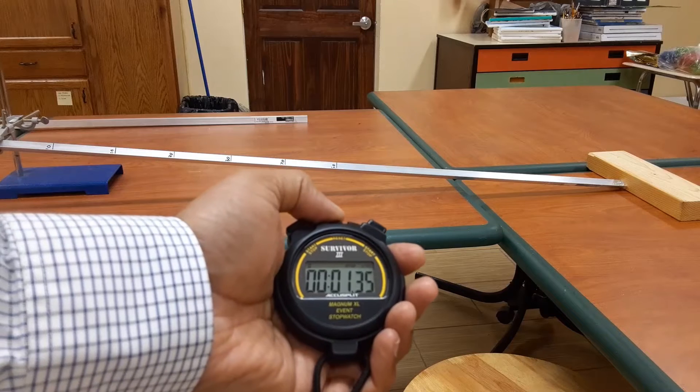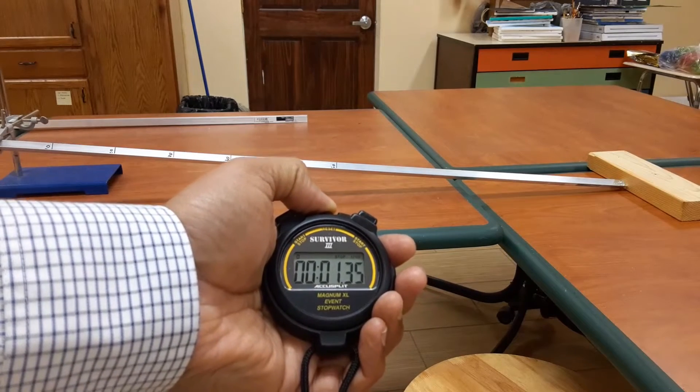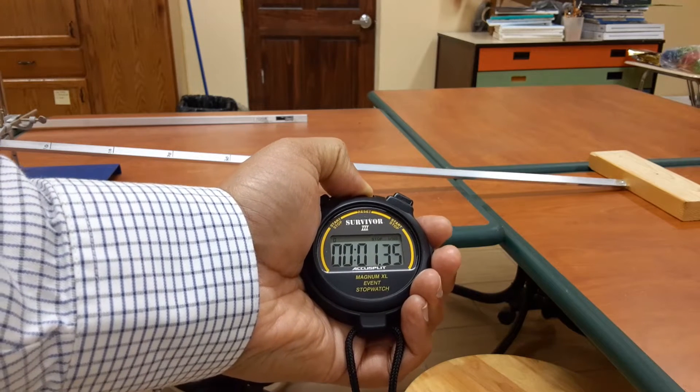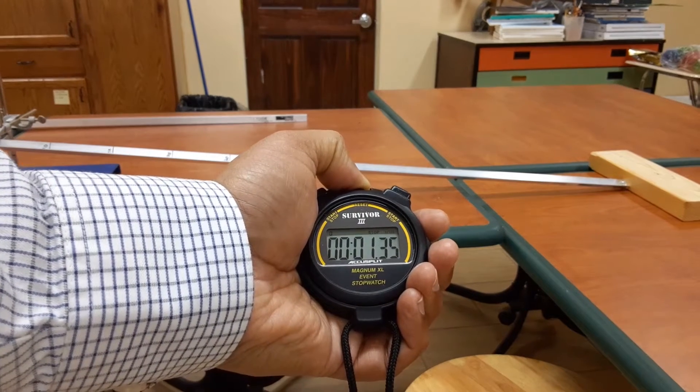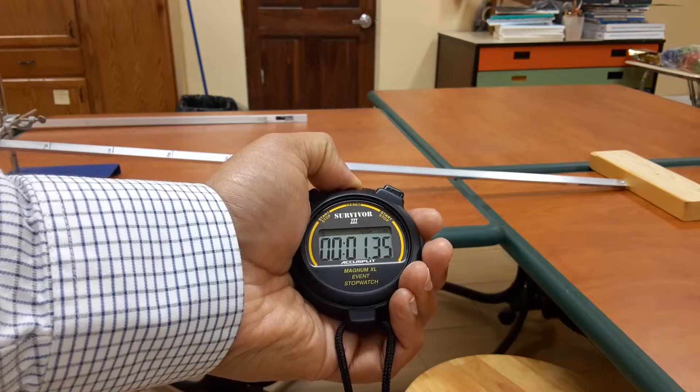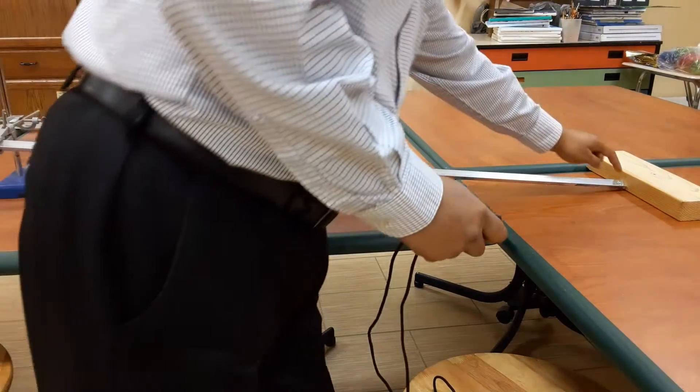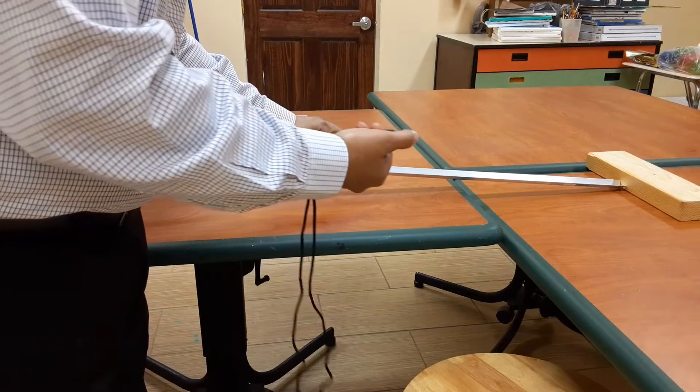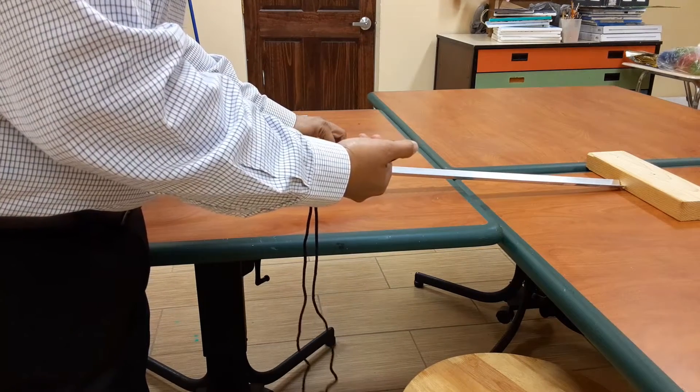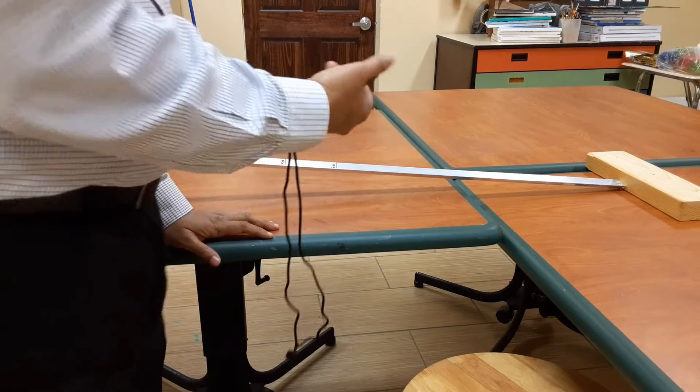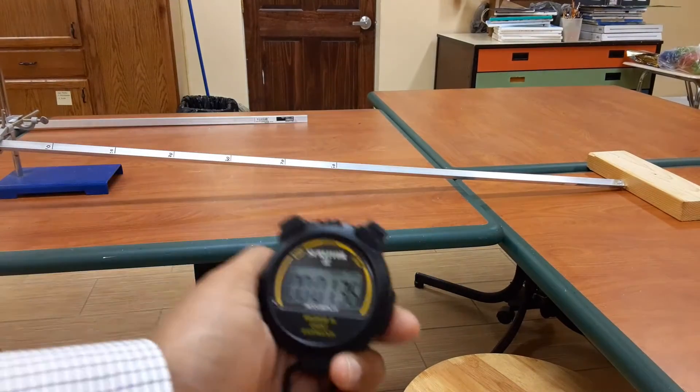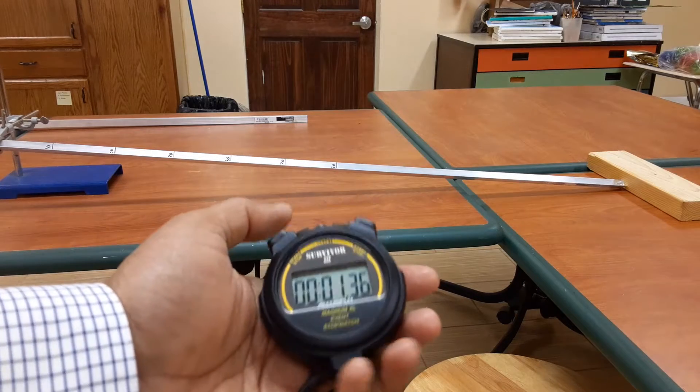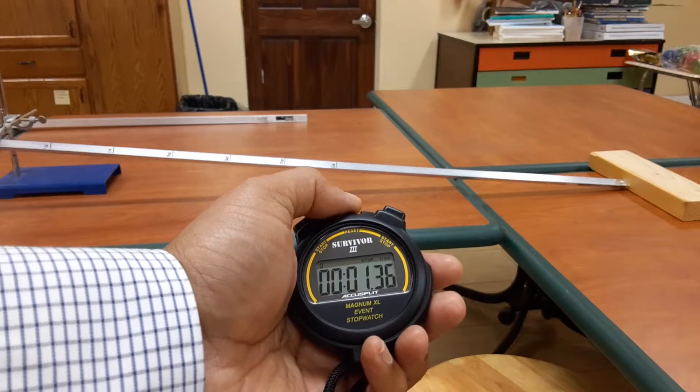Now we don't just do this experiment once because there is a big uncertainty in the measurement of time. So we will repeat this value. So I would repeat this again at length is equal to 0.60 meters. 1, 2, 3. So the next time I can see that the time is 1.36 seconds. So let's put these values down in our table.